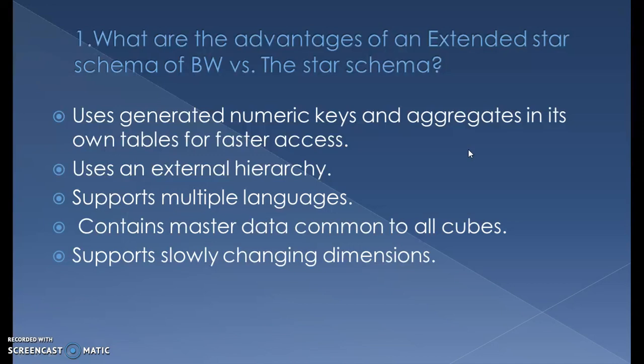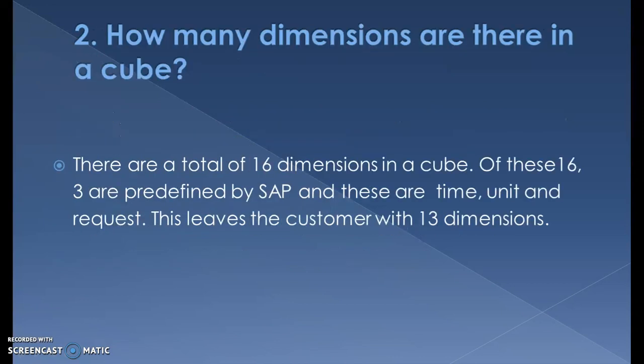In the star schema we have the fact table and dimensions. In the extended star schema we have the fact table, dimensions, and master data. Key differences: the extended star schema uses numeric keys and aggregates in its own tables for faster access, uses an external hierarchy, supports multiple languages, contains master data common to all cubes, and supports slowly changing dimensions.